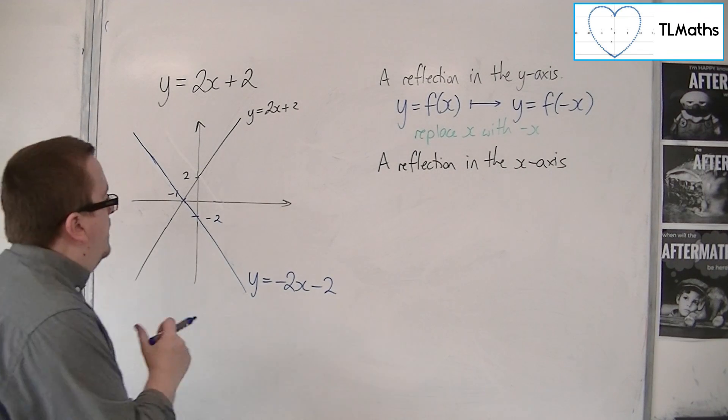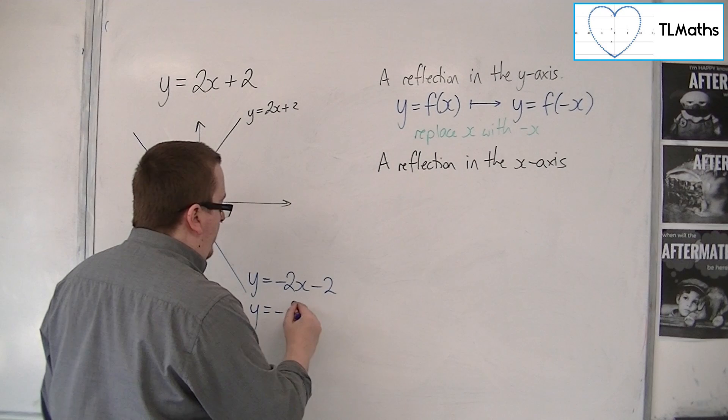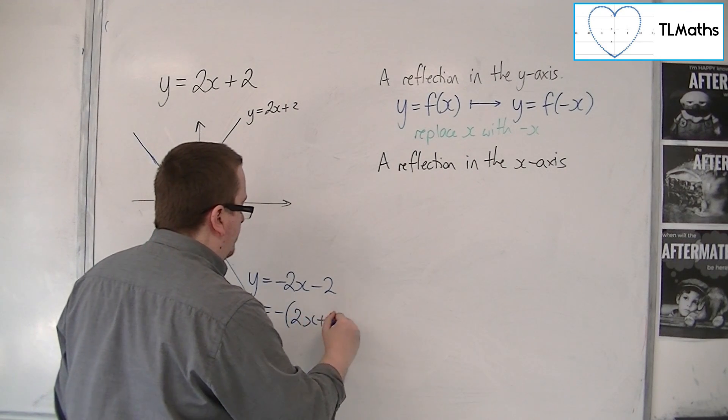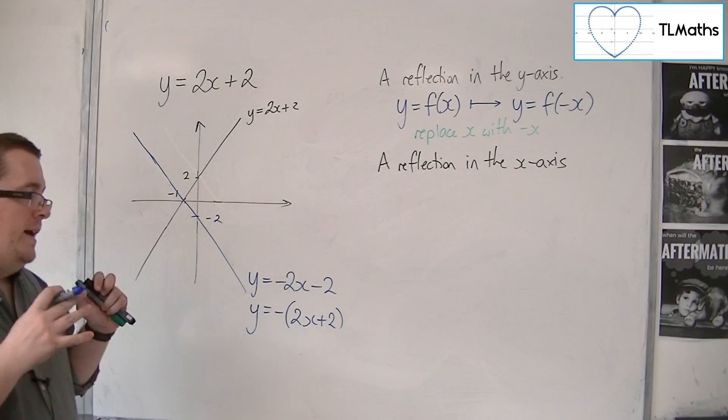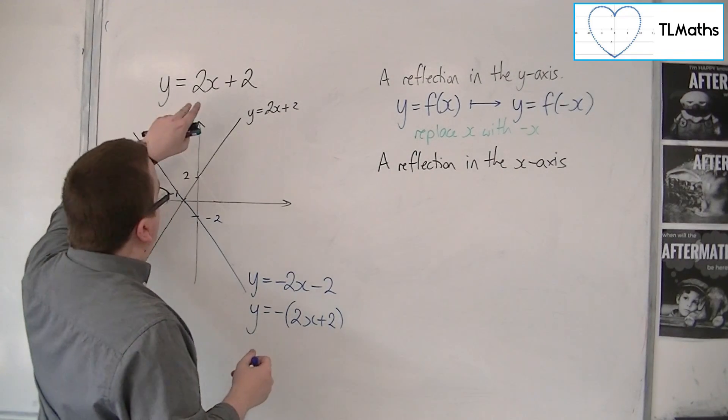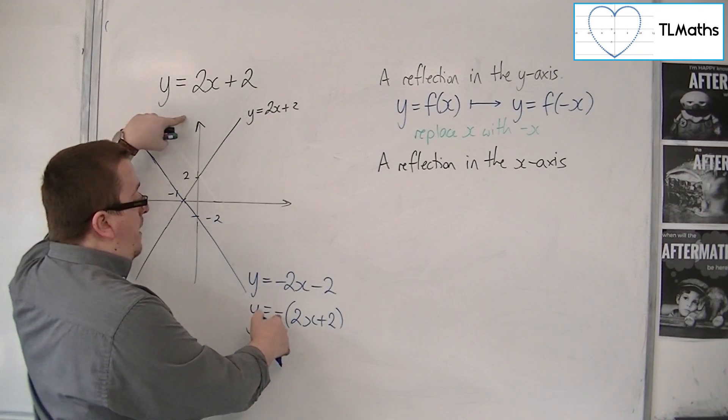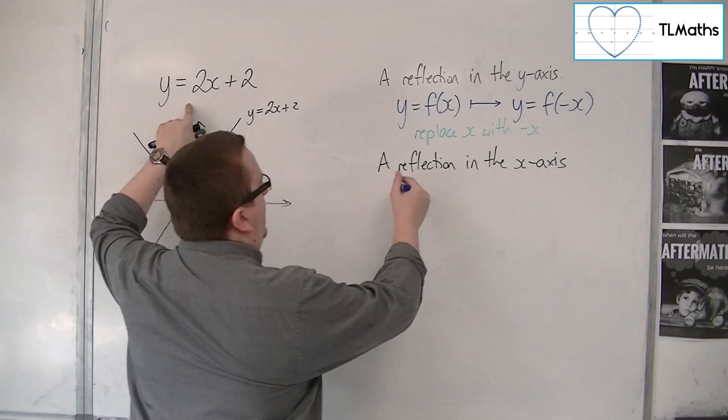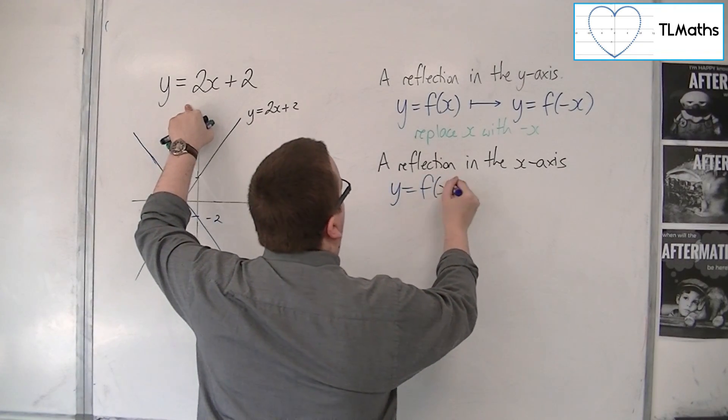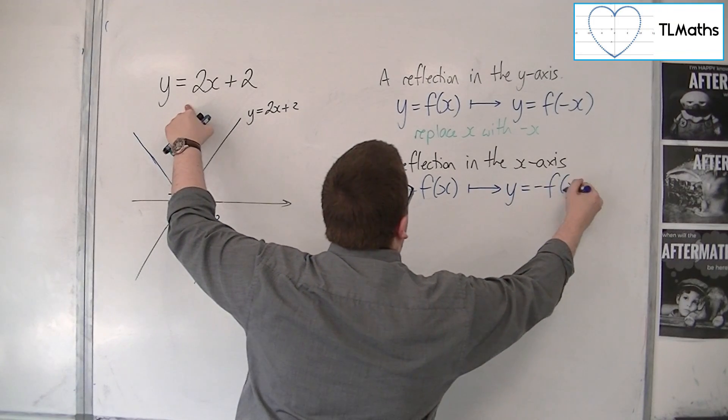OK, now it's a good idea to rewrite this as minus, take the minus sign out of the whole thing. OK, and then you can see maybe what's going to happen here. Because we're going from this line to that line, what's changed is there's now a minus sign outside the whole thing. And so y is equal to f of x has become y is equal to minus f of x.